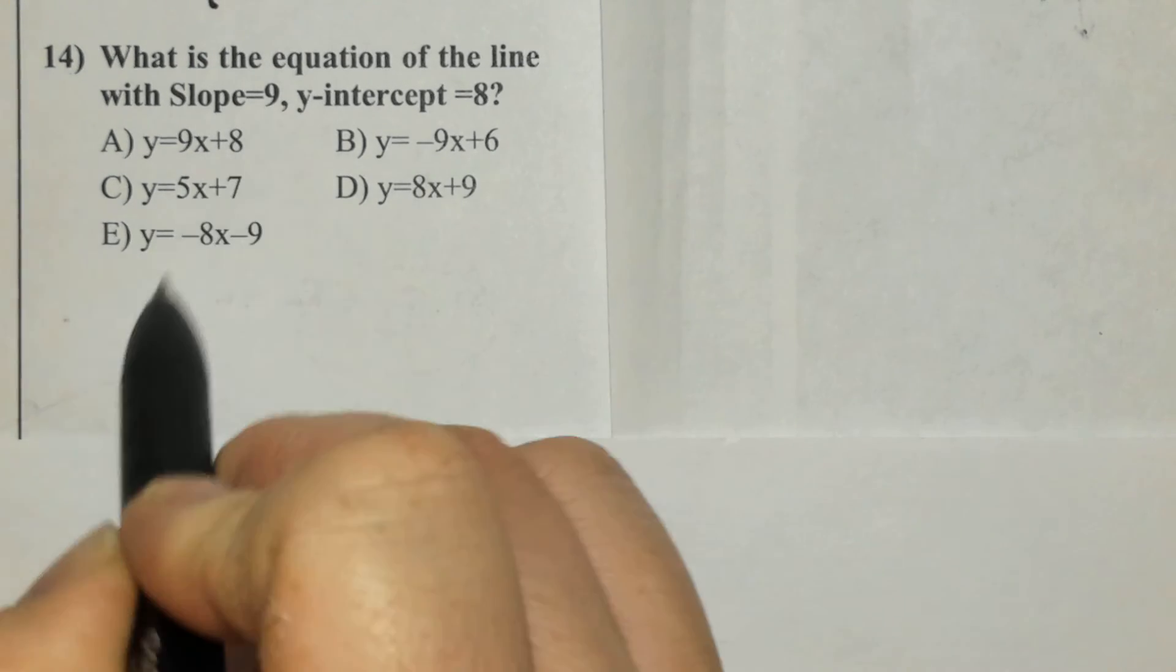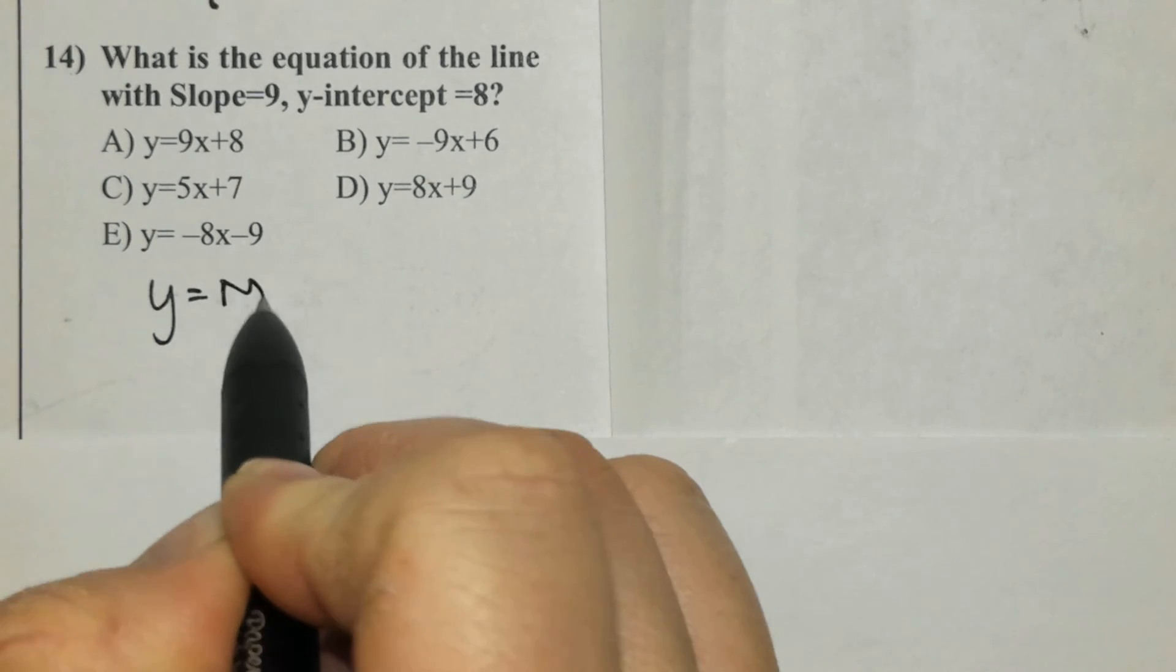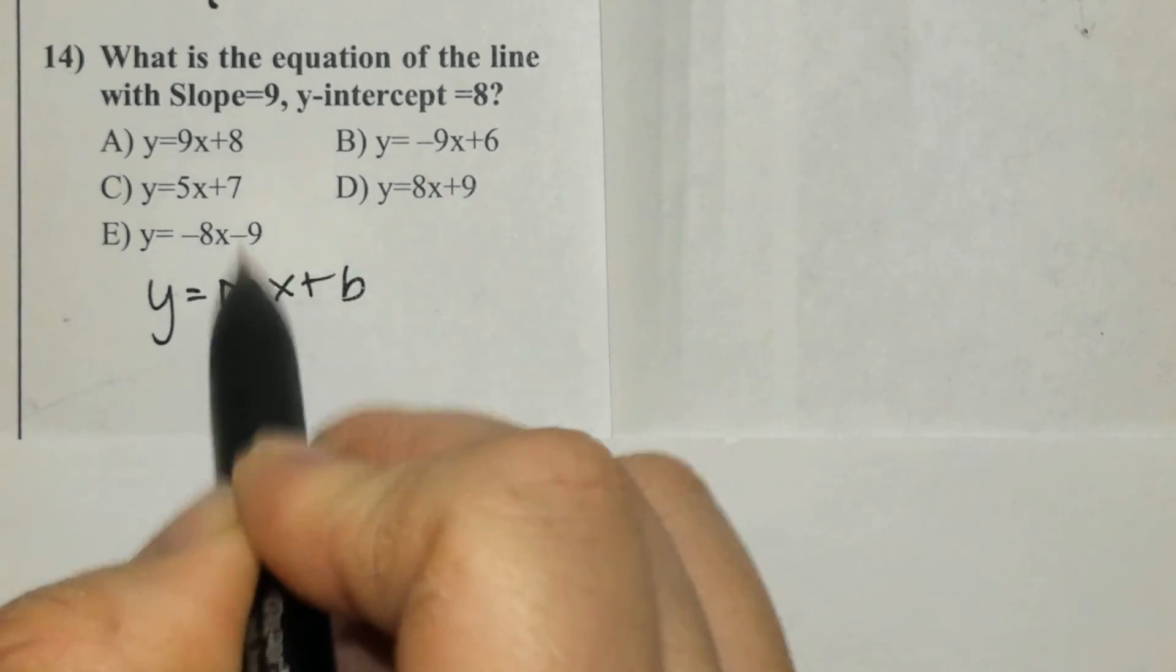In this problem, they already tell us we have mx plus b. They already tell us the slope is 9.